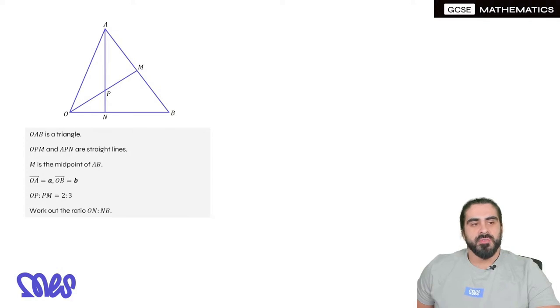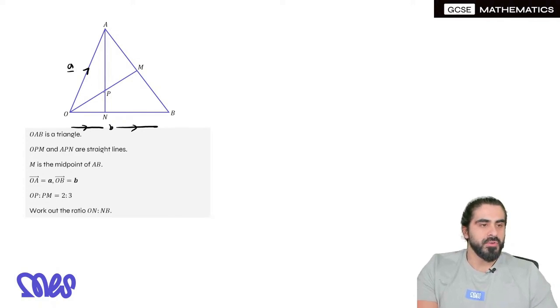It says OAB is a triangle. OPM and APN are straight lines. M is the midpoint of AB. OA = A, OB = B. The ratio OP:PM is 2:3. Work out the ratio ON:NB.